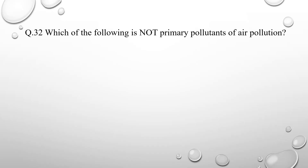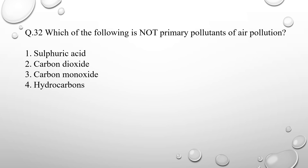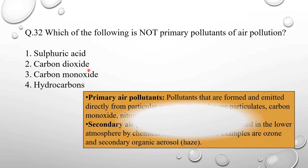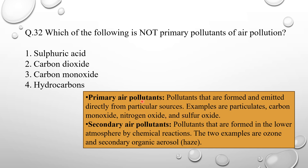Question number 32: which of the following is NOT a primary pollutant of air pollution? Read carefully — they ask for the option that is NOT a primary pollutant. Carbon dioxide, carbon monoxide, and hydrocarbons are all primary pollutants. Sulfuric acid is not a primary pollutant — it is a secondary pollutant. So option number 1, sulfuric acid, is correct.